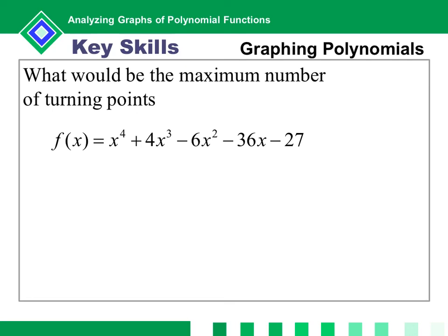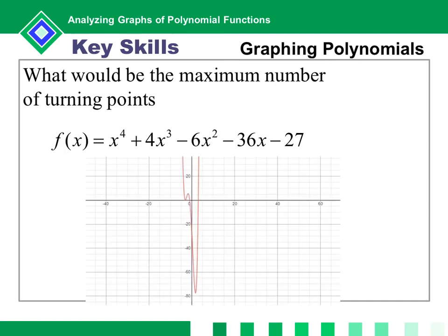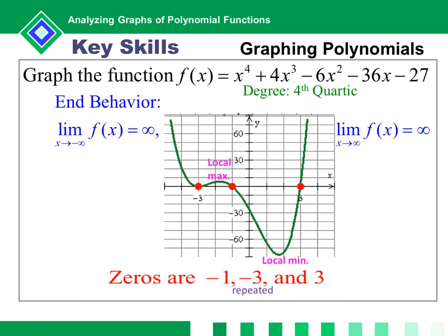For the polynomial with degree 4, the maximum number of turning points is n minus 1 equals 3. When you graph it you can see one turning point, then another, then another. A turning point is a local maximum or minimum. You can see the zeros on the graph as well — the local maximum turning point is visible and the zeros are marked.